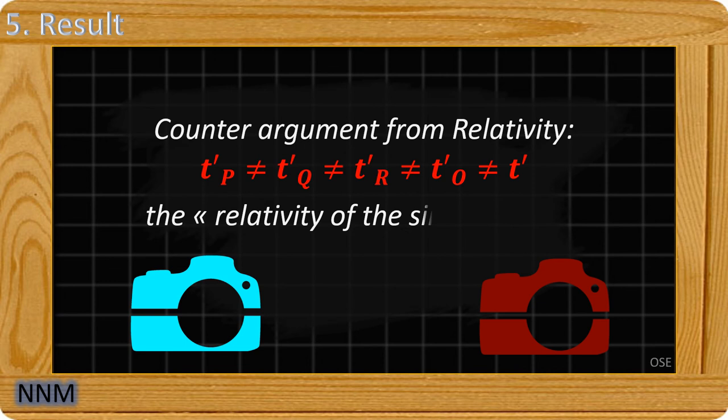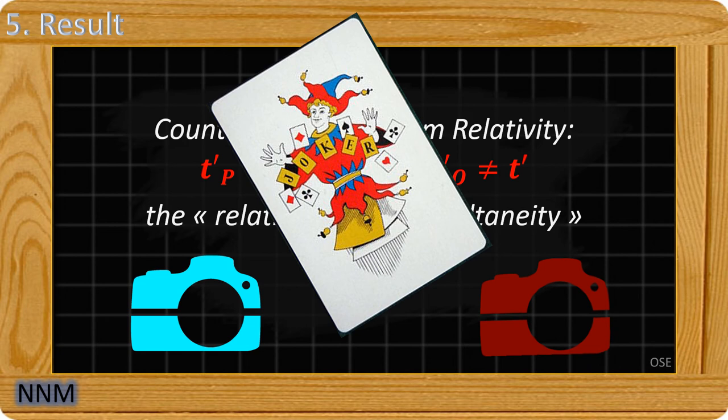This is what they call the relativity of simultaneity. This is a kind of joker card that is stronger than all the other cards, than all the other arguments, than all the derivations.